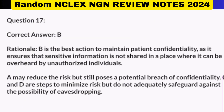Correct answer: B. Rationale: B is the best action to maintain patient confidentiality, as it ensures that sensitive information is not shared in a place where it can be overheard by unauthorized individuals. A may reduce the risk, but still poses a potential breach of confidentiality. C and D are steps to minimize risk, but do not adequately safeguard against the possibility of eavesdropping.